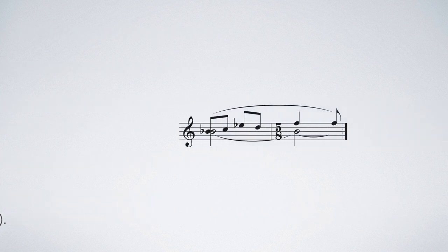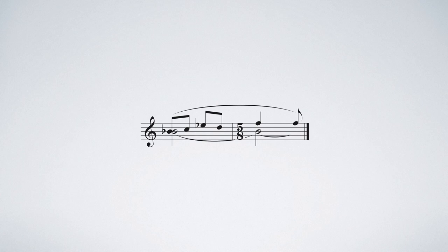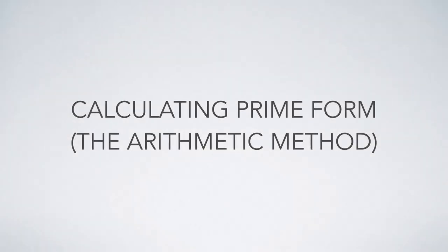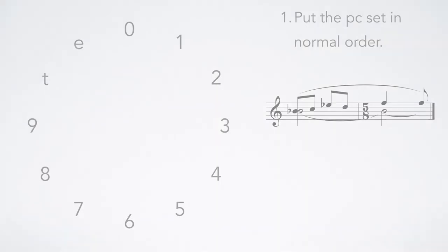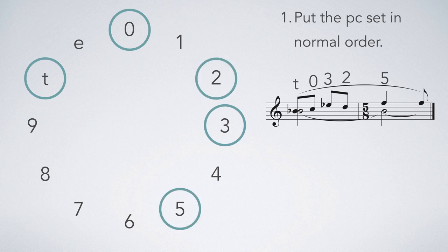Let's try applying this process to the motive from Bartók's Subject and Reflection. The pitch class set as it first appears in the right hand is 10, 0, 3, 2, 5. We need to put this in normal order, moving clockwise while avoiding the biggest gap. This means starting at 10.